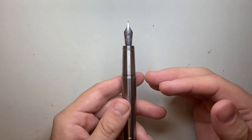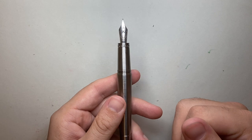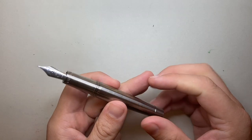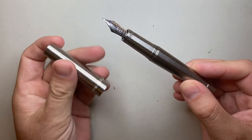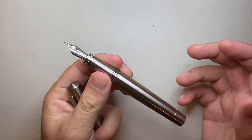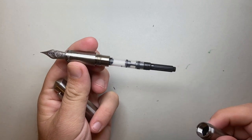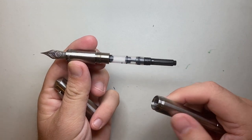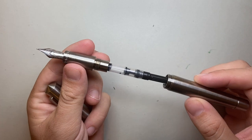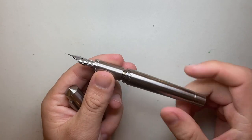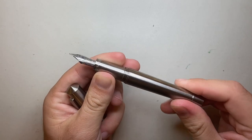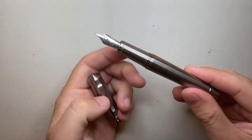The pen comes in either fine or medium and this is the fine. It is a titanium body and it is grade five titanium. The pen is a cartridge converter pen and it comes with a Schmidt converter. You've got good solid metal threads to close down that barrel.